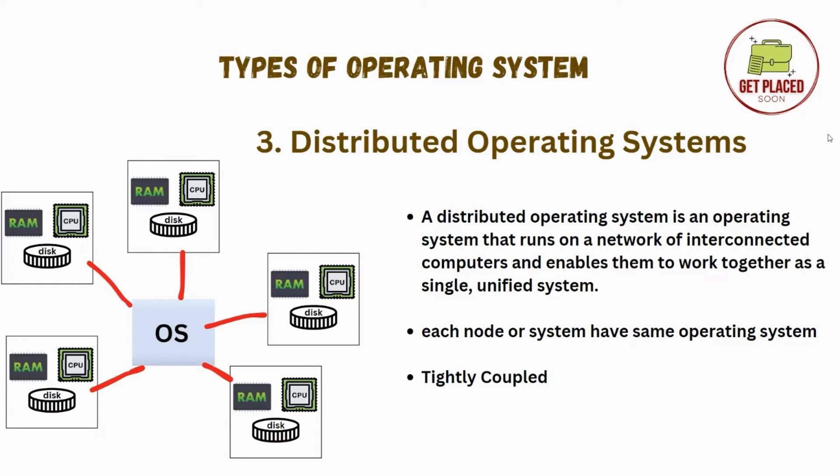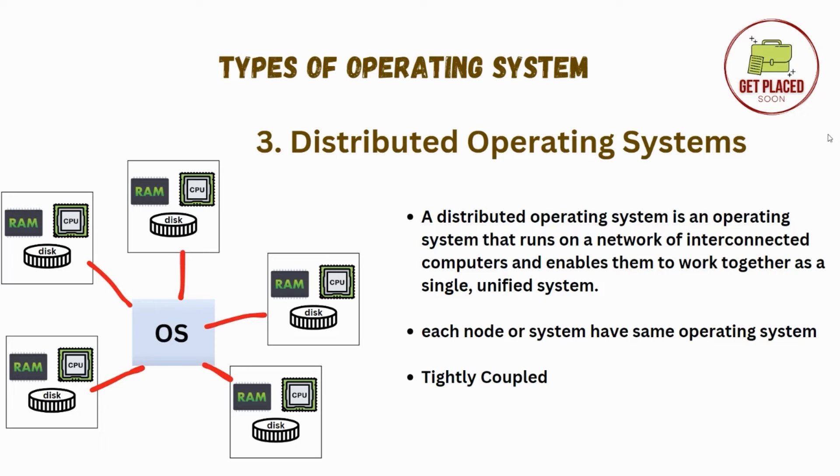Distributed operating system is tightly coupled, which means changes to one component — even a small change in one part — require corresponding changes to other components. So distributed operating system is tightly coupled.